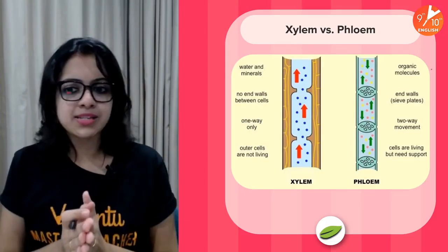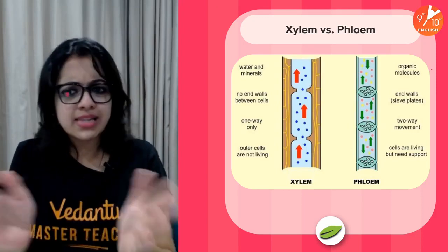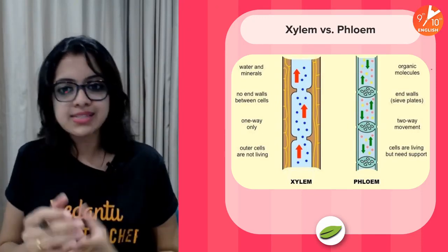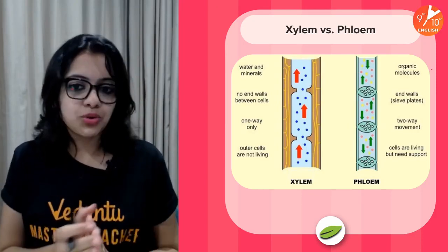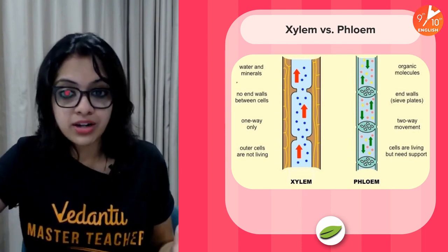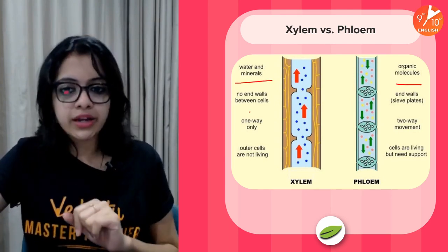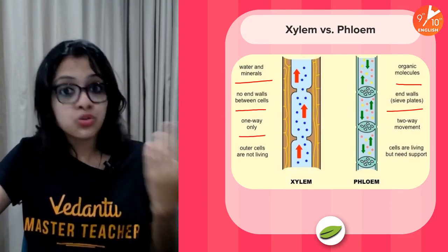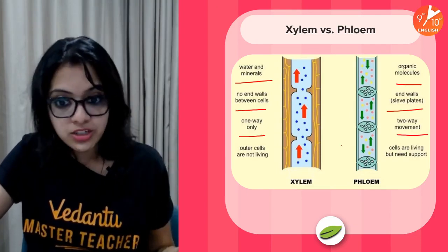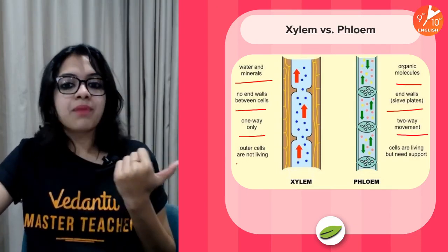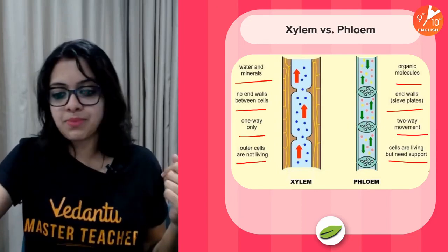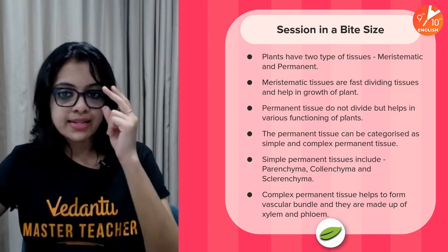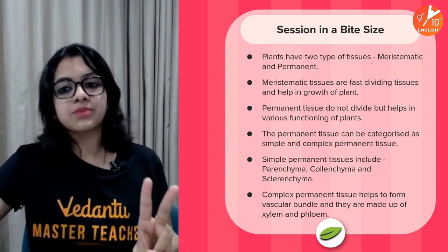Here is a comparison between xylem and phloem — take a screenshot for quick reference. Key differences include their functions, structural features like end walls, directionality of transport (unidirectional vs. bidirectional), and whether the cells that make them up are living or non-living.